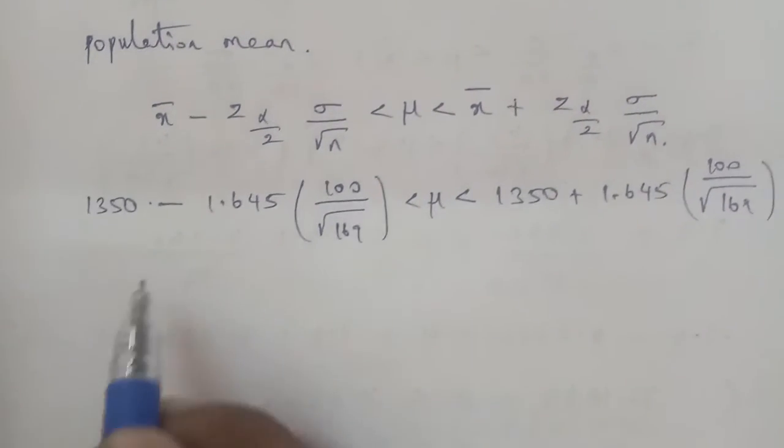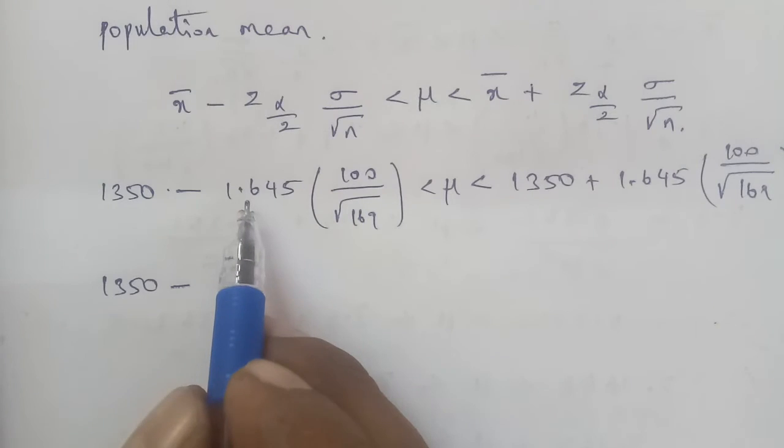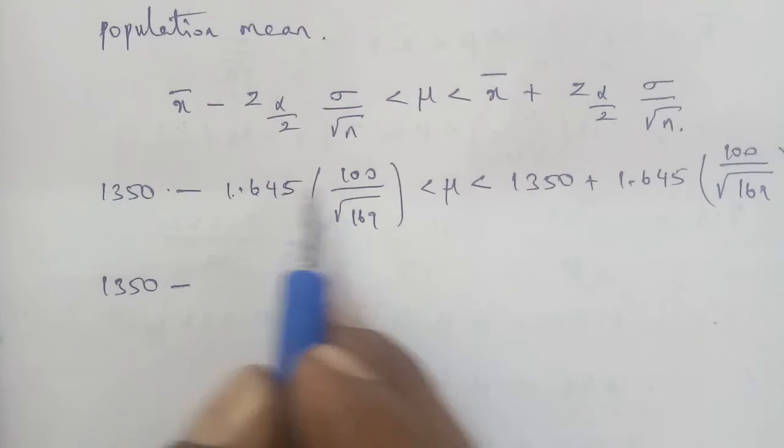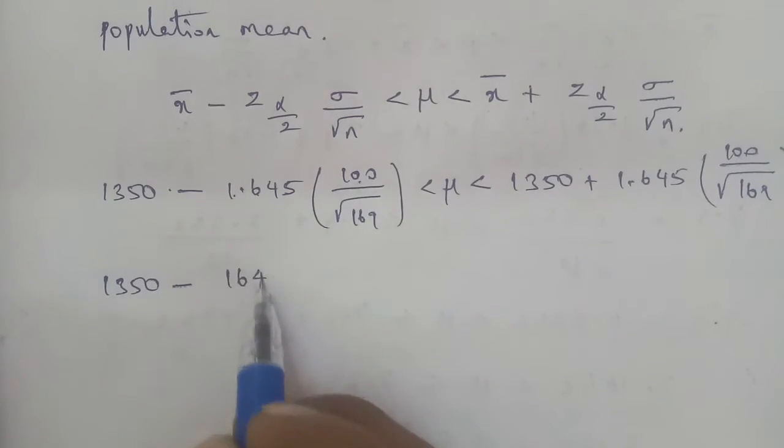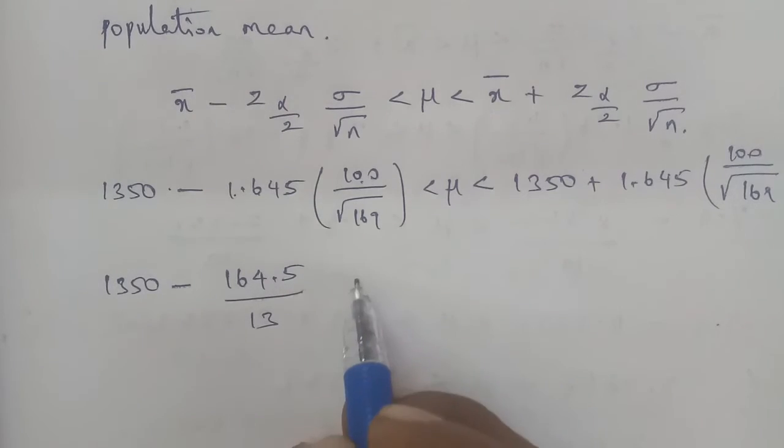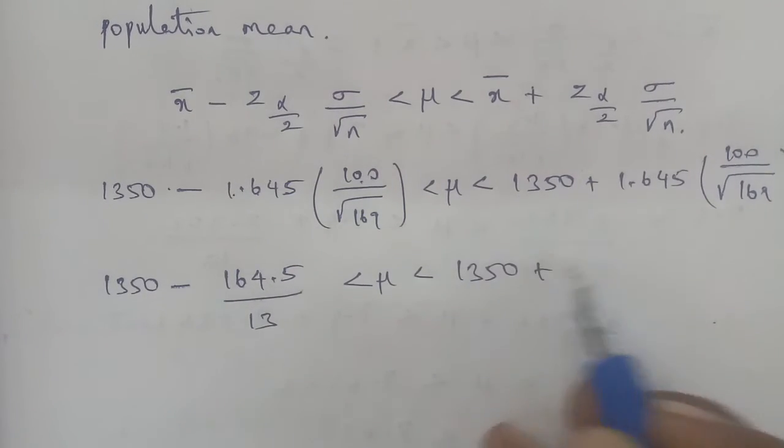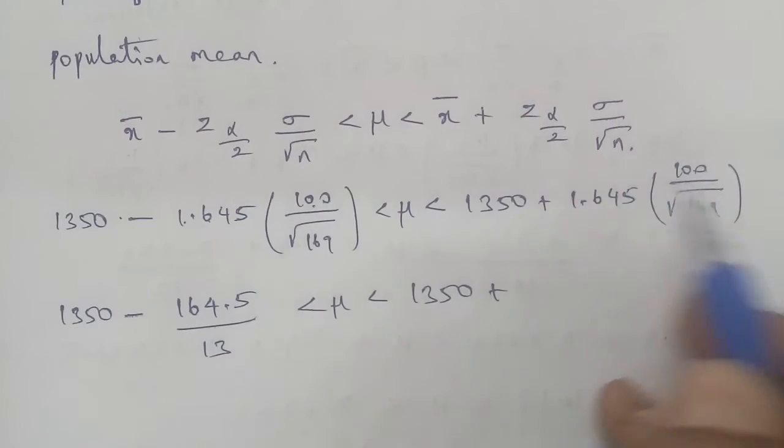Next, we do the calculation. This is 1350 minus the numerator 1.645 times 100, which gives us 164.5. So 1350 minus 164.5 divided by √169, and the same calculation on the other side: 1350 plus 164.5 divided by √169.